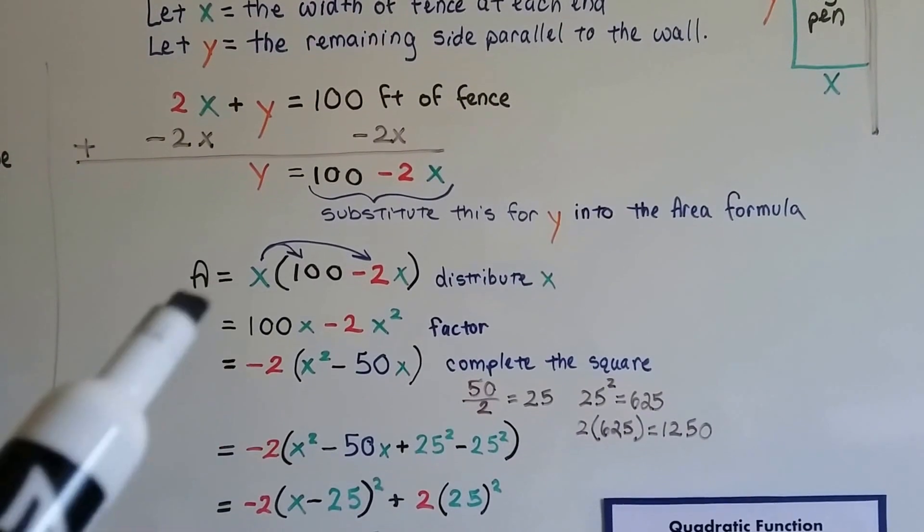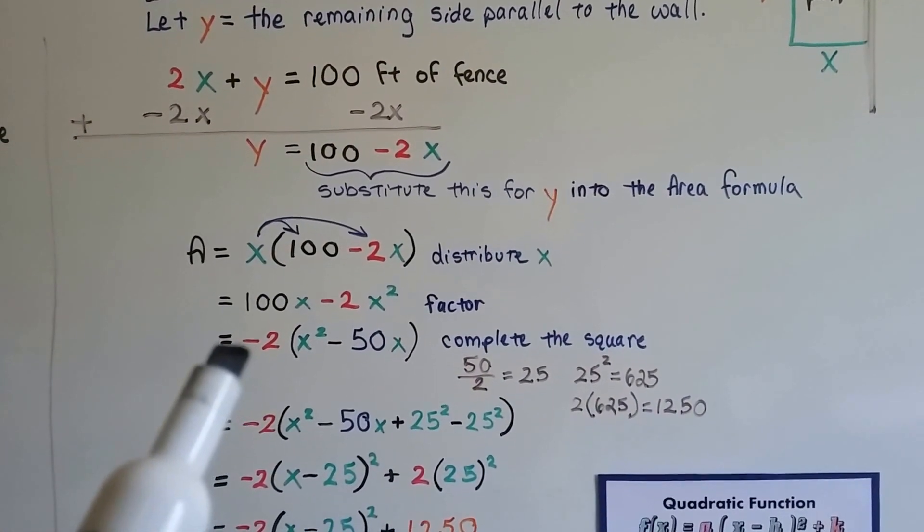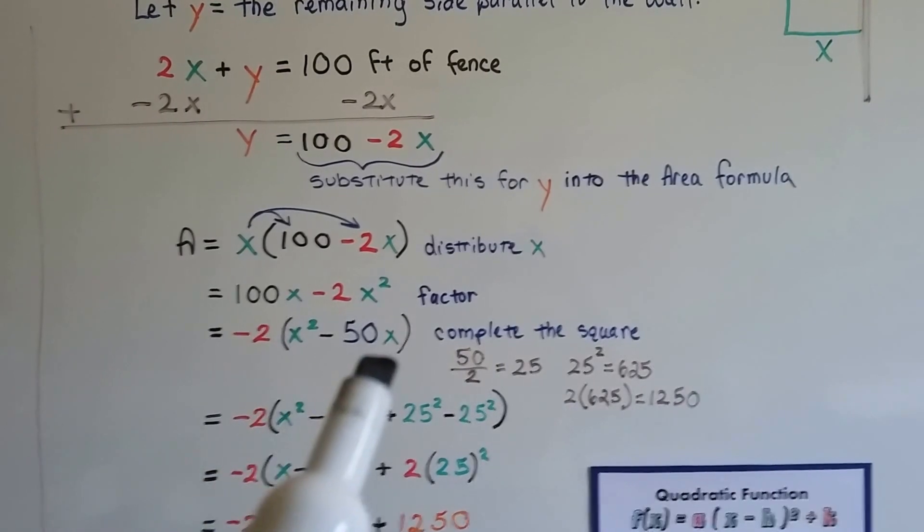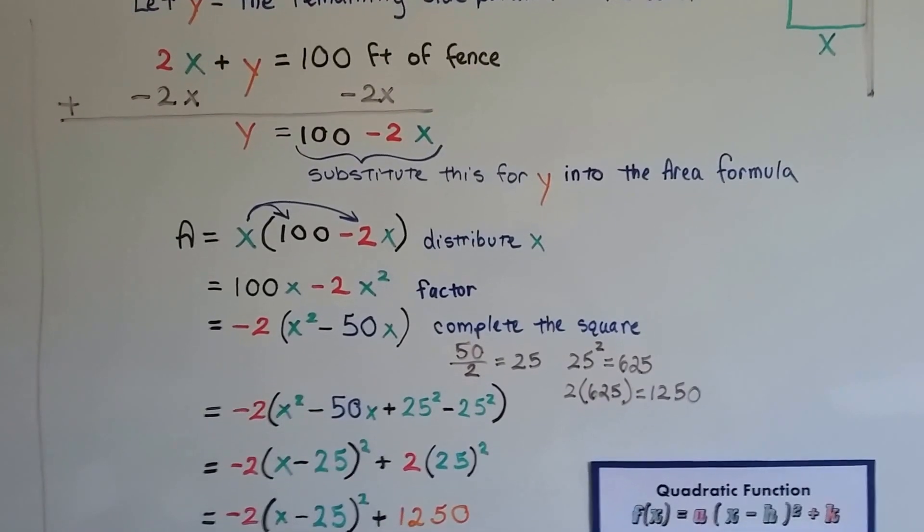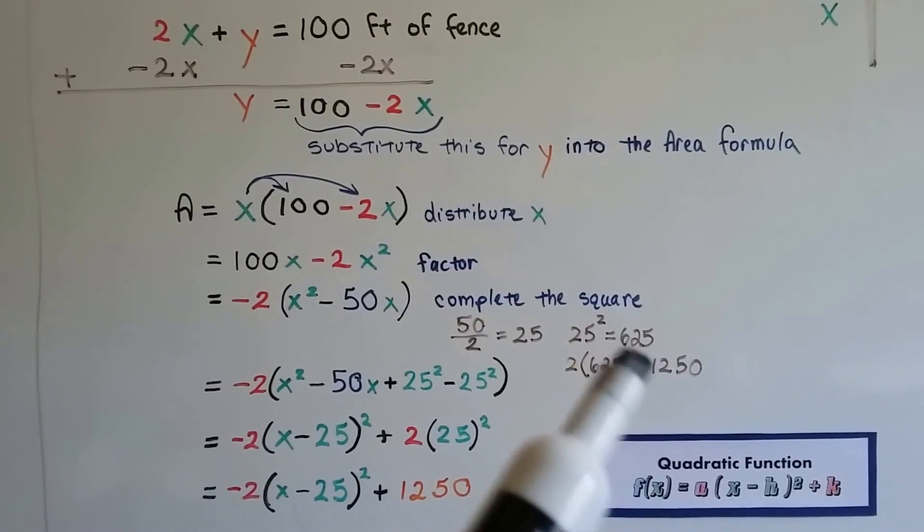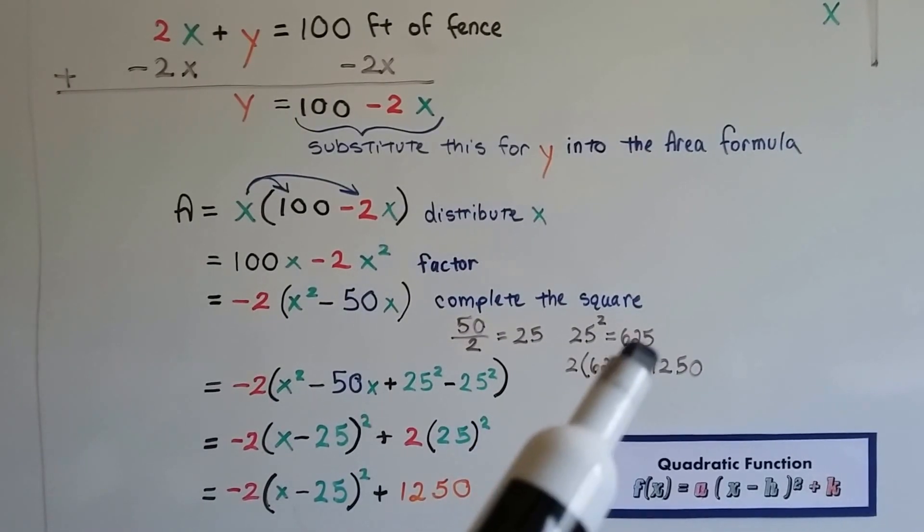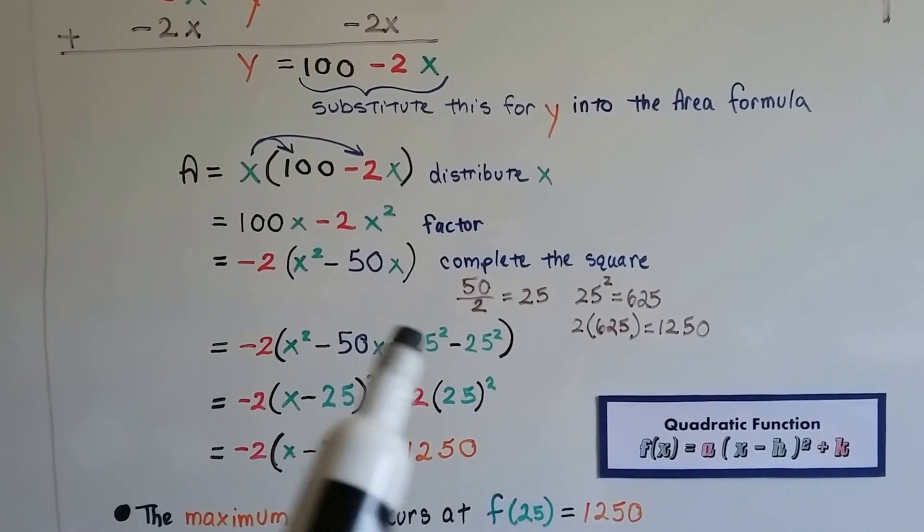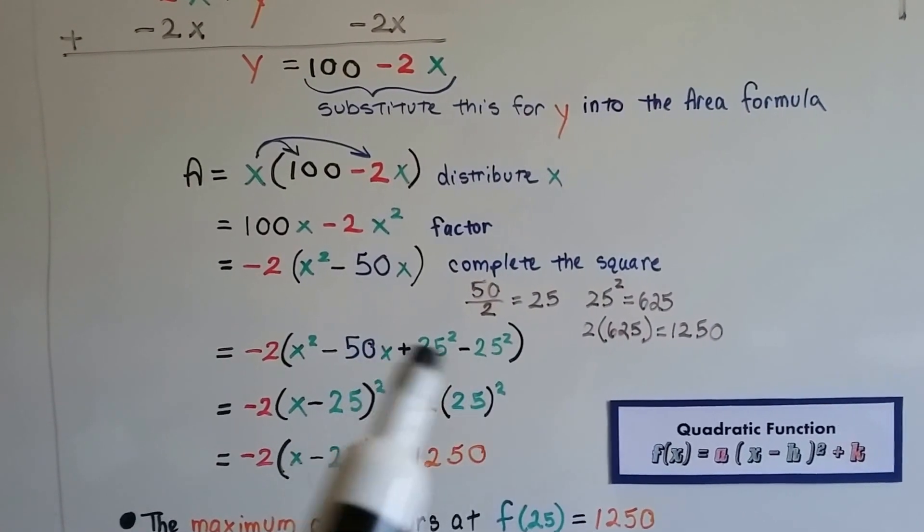We can factor this. We get -2(X² - 50X). We can complete the square. We divide this 50 in half and get 25, and then we square it. 25 times 25 is 625.